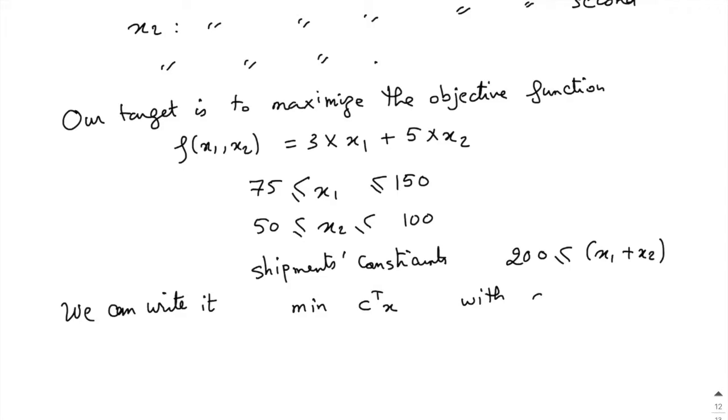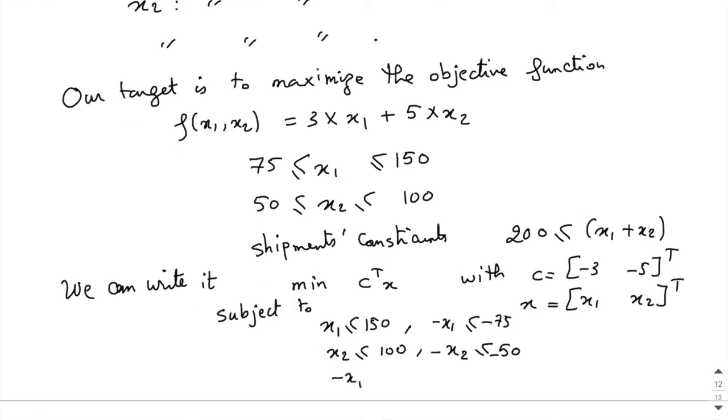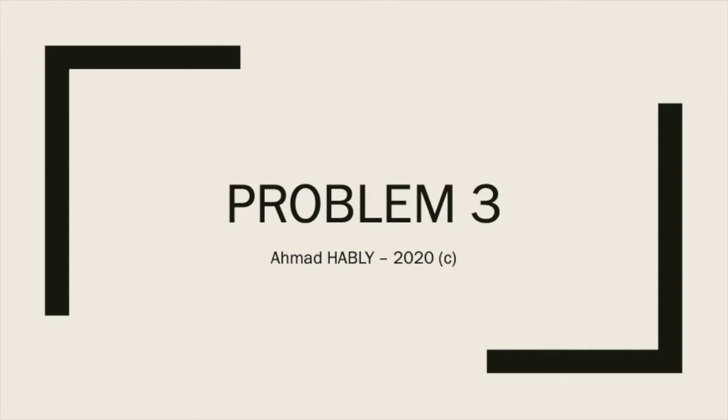We can write it in this matrix form where C is the coefficients of the objective function and X is the vector of decision variables X1 and X2, subject to the constraints. Here we will write X1 less than 150 and minus X1 is less than minus 75, and so on. We can take X positive.